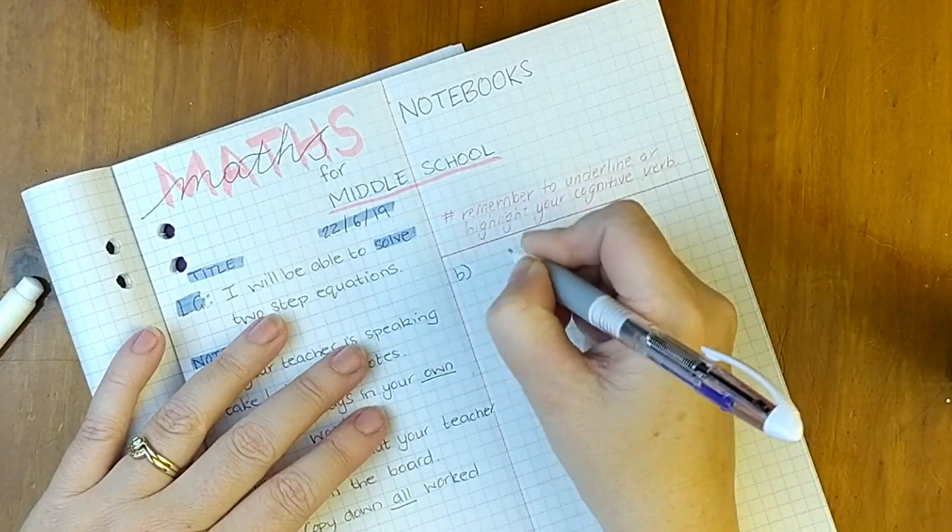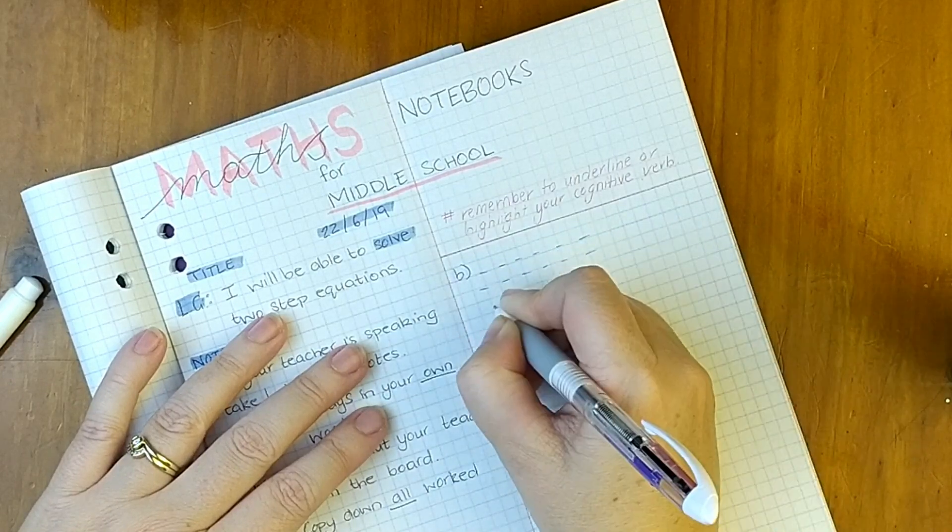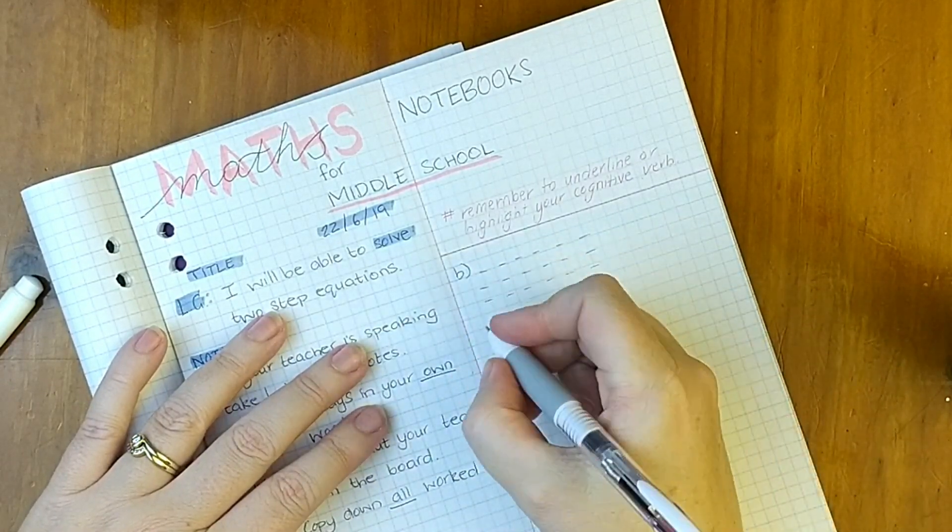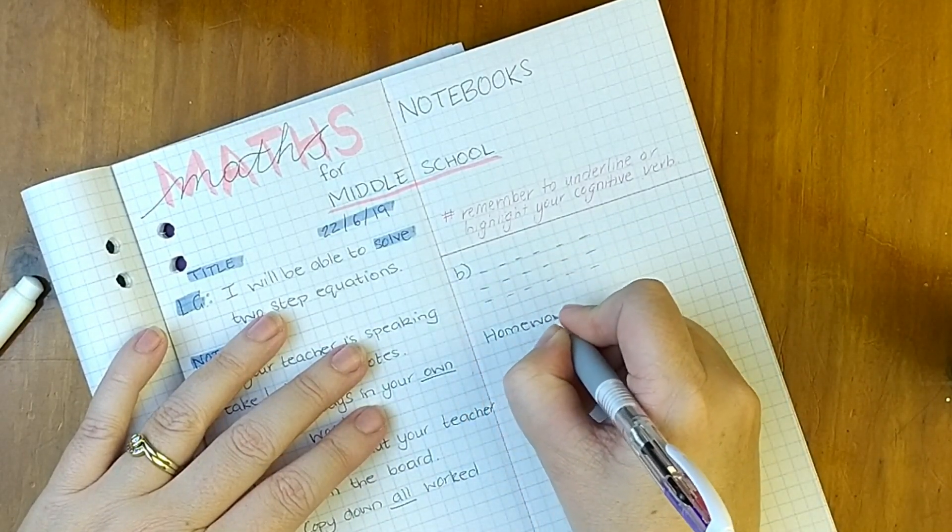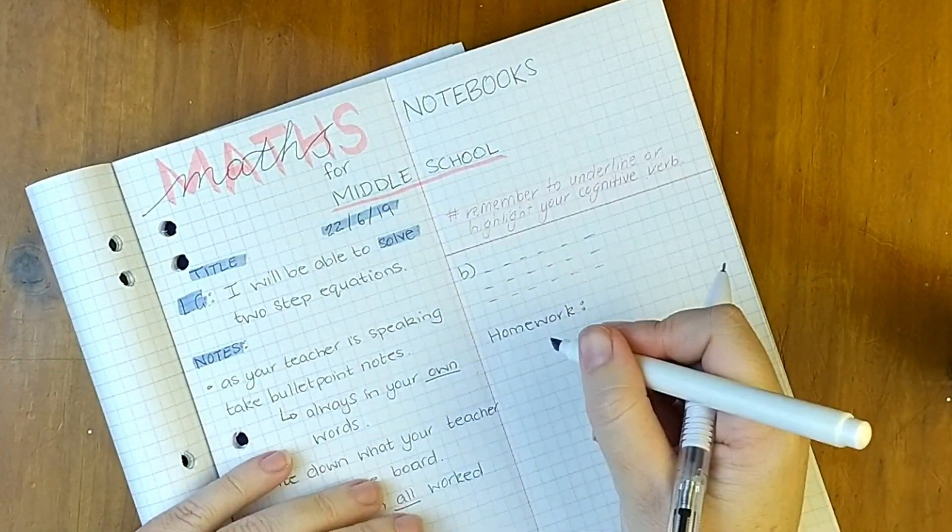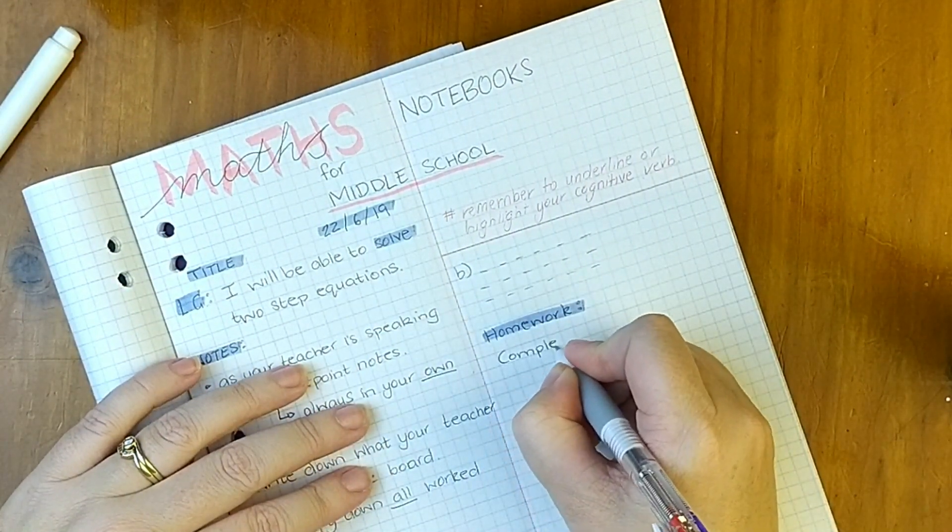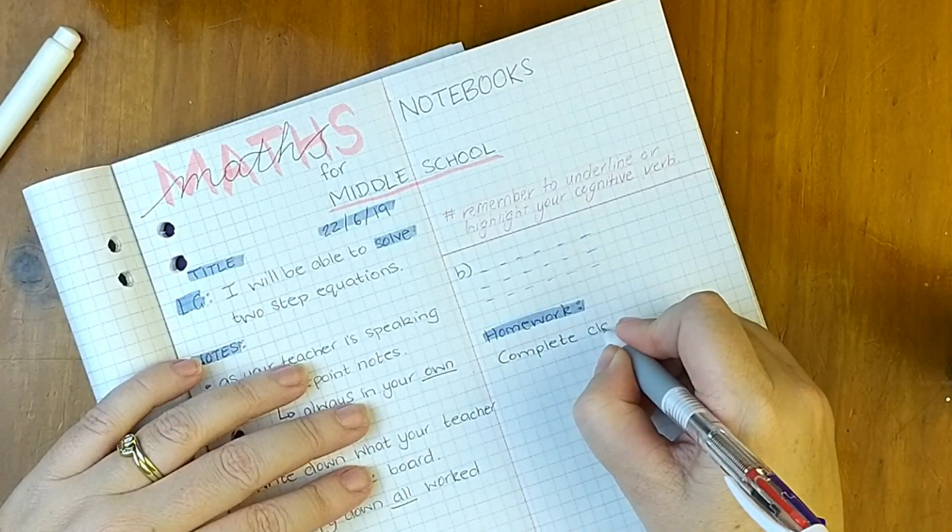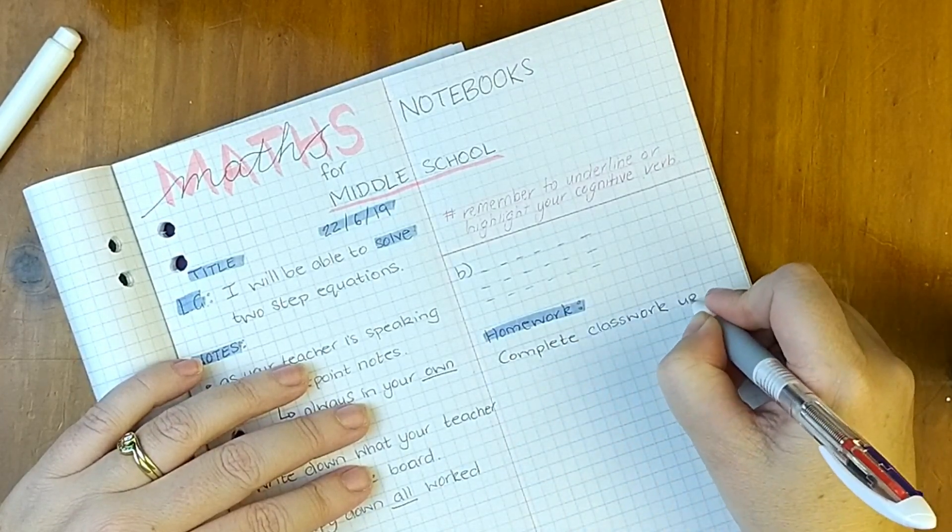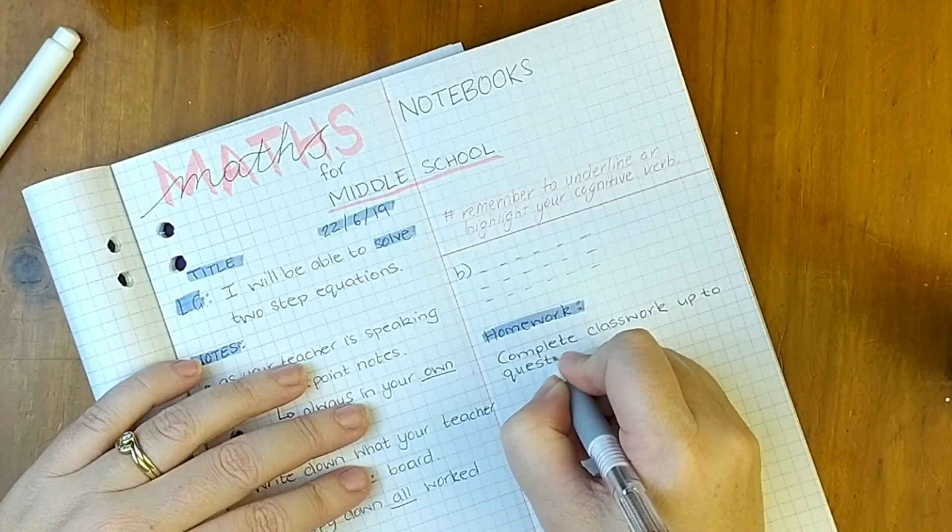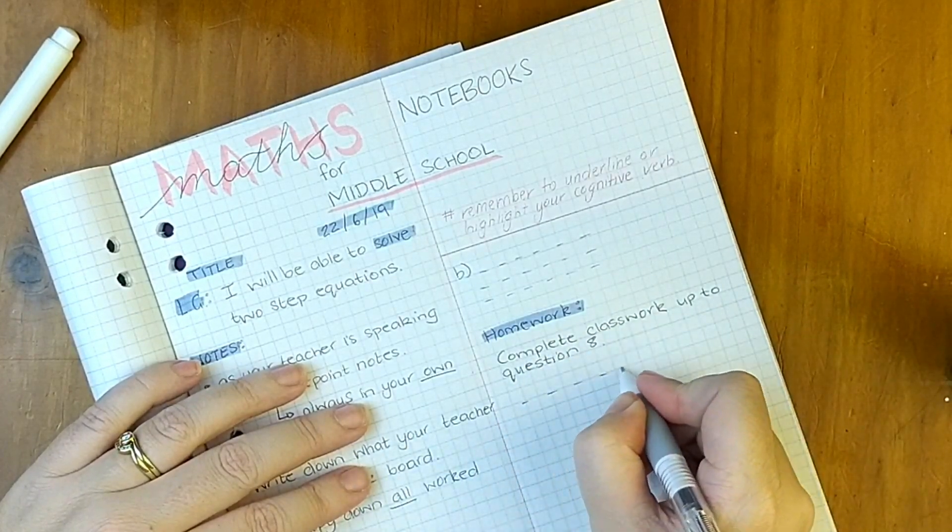Once we're ready to go, labeling our questions just as they are in the textbook makes it easy to find later on. In terms of homework, you always want to write your homework in your academic notebook so that you are able to find it easily. Your homework should always be completed in your grid book underneath the day's work.